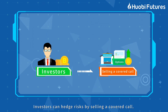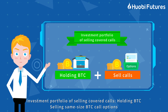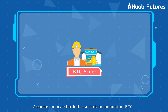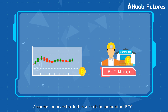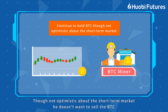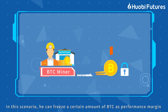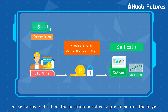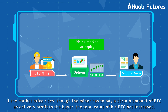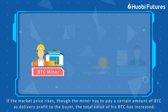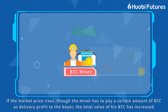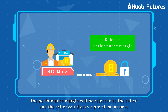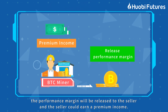Investors can hedge risks by selling a covered call. The investment portfolio of selling covered calls involves holding BTC plus selling same-size BTC call options. Assume an investor holds a certain amount of BTC, though not optimistic about the short-term market and doesn't want to sell the BTC. He can freeze a certain amount of BTC as performance margin and sell a covered call on the position to collect a premium from the buyer. If the market price rises, though the holder has to pay a certain amount of BTC as delivery profit to the buyer, the total value of his BTC has increased. If the market price remains unchanged or falls, the performance margin will be released to the seller and the seller could earn a premium income.